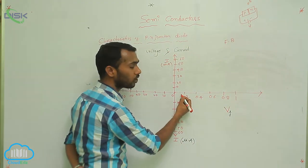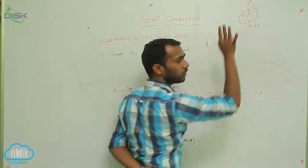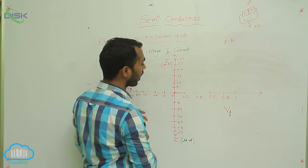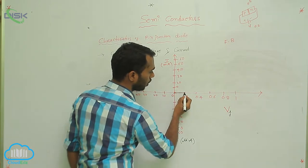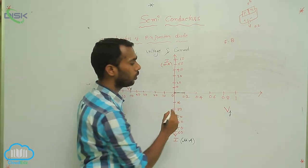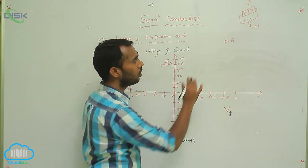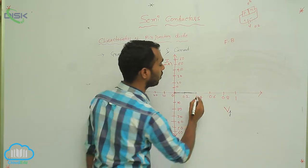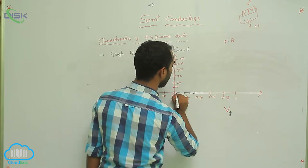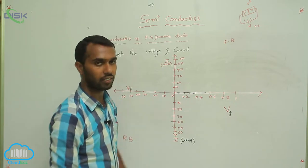That is why here I am applying the voltage. If you apply 0.2V, there is no change — current does not pass, current is zero. Even though you apply 0.2V, current is zero. At 0.4 volts, current is still zero. We have to apply more than 0.6 volts. Up to 0.6 volts, current is zero in forward bias.